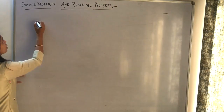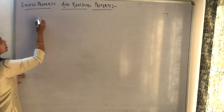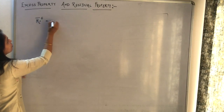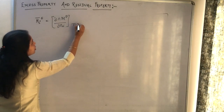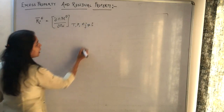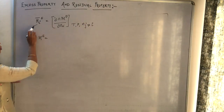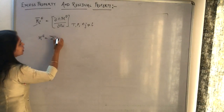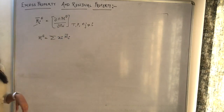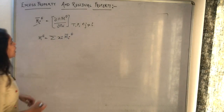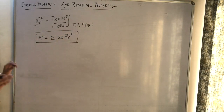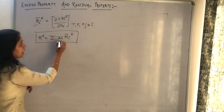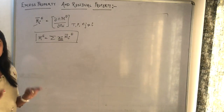Also write the excess property in terms of partial molar property. The partial molar excess property for any component i is given by the derivative of n*M_excess with respect to n_i. This is the general form already discussed in partial molar properties. M_excess equals summation of xi*M_i_bar. You can write excess molar property in terms of partial molar property. When talking about residual property, in place of xi you write yi — that is the only difference.